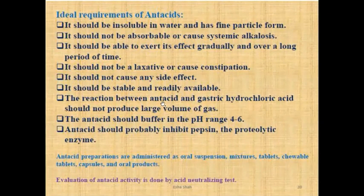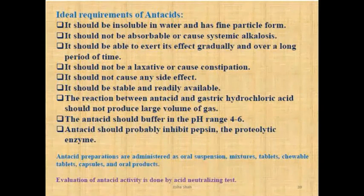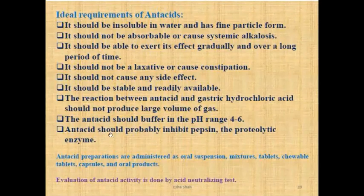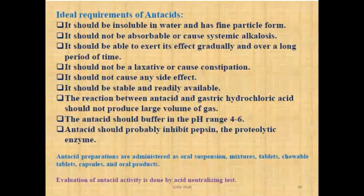Next, the reaction between antacid and gastric hydrochloric acid should not produce a large volume of gas. The antacid should not react abruptly with gastric acid to release hydrogen, chlorine, or other gases causing a large gas production. The antacid should buffer in the pH range of 4 to 6 — it should not go higher or lower than this range. Additionally, the antacid should inhibit pepsin, the proteolytic enzyme, which helps in protein digestion, thereby helping reduce the acidity content.